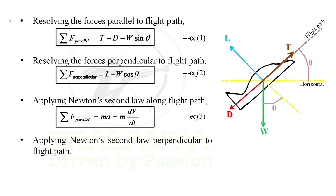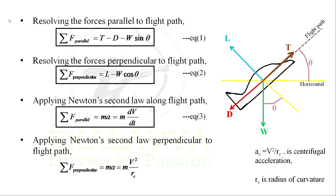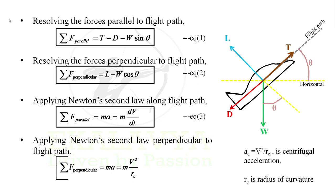Applying Newton's second law perpendicular to the flight path: summation of forces perpendicular to the flight path equals mass times acceleration perpendicular to the flight path. This acceleration is centrifugal acceleration, which can be expressed as velocity squared divided by the radius of curvature Rc. Let us denote this as Equation 4.